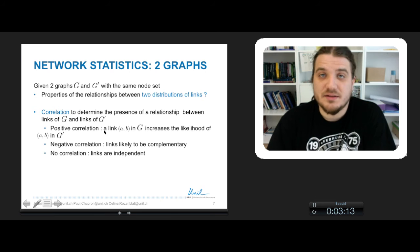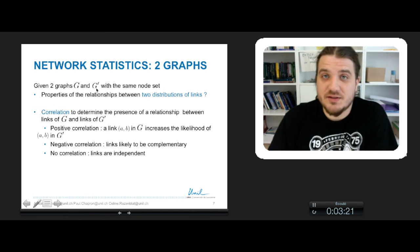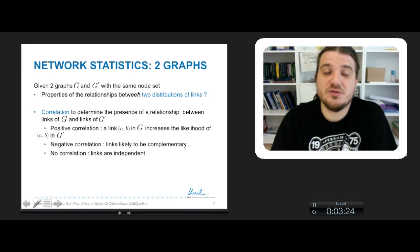But what we are interested in is network statistics between two graphs. So let's say that we have a graph G and G' with the same node set. We can wonder what are the properties of the relationship between the two distributions of links of these two graphs.